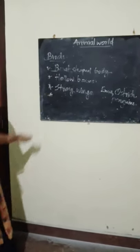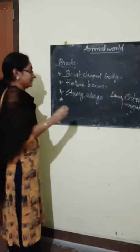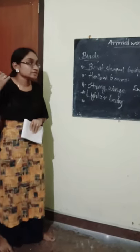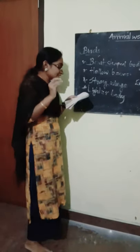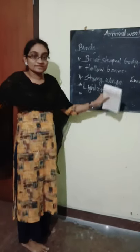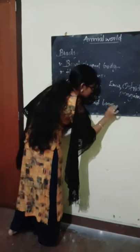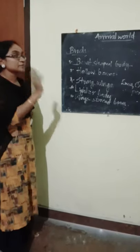So we are discussing the adaptations of birds for flying — they need strong wings. The next adaptation is their lighter body — their body is very light in weight. Also, their wings are attached to the breast bone, which is very strong, and this helps them to flip their wings.